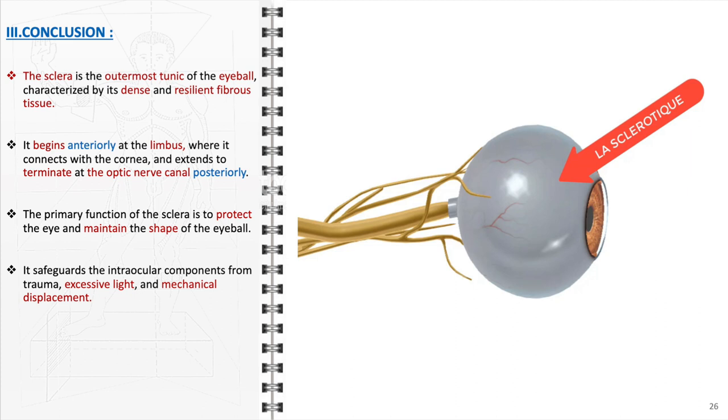Moreover, the sclera's robust composition and strategic placement of apertures for vascular and nervous elements facilitate the efficient functioning of the eye. By providing attachment points for the extraocular muscles, it also contributes to the dynamic aspect of vision, allowing for eye movement and focus adjustments.